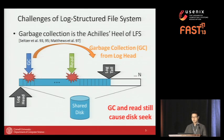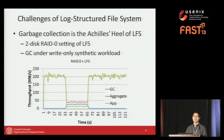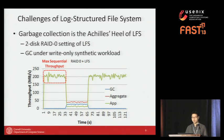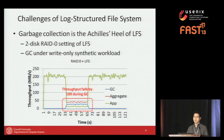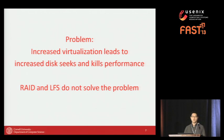One might think of RAIDing multiple disks and running a log-structured file system on top, but RAID alone doesn't solve this problem. We ran a simple experiment on a two-disk RAID 0 with a log-structured scheme running a write-only workload. Without garbage collection, we get maximum throughput above 200 MB/s from two disks. But once garbage collection is triggered, the application throughput collapses below 10x. Increased virtualization leads to increased disk seeks, and RAID plus log-structured file system cannot absolutely solve this problem.